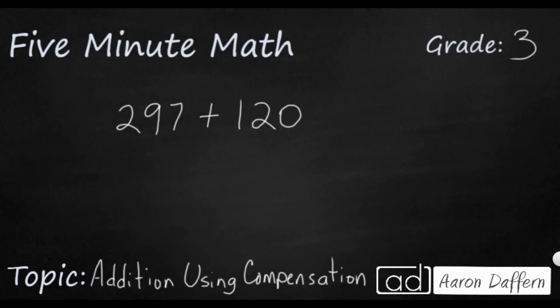There's a few different ways you can do this. One thing that you should probably notice is that 297 is awfully close to 300. If we could just take 3 from our 120, make that into 117, then this 297 becomes 300 and that becomes really simple. 300 plus 117 is going to be 417.